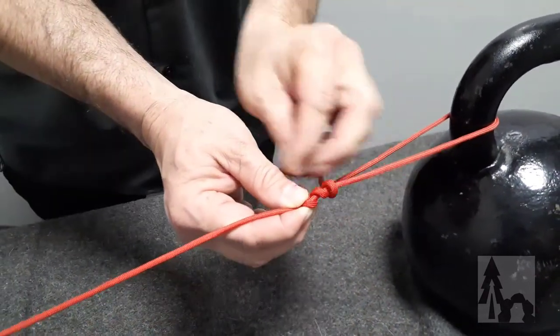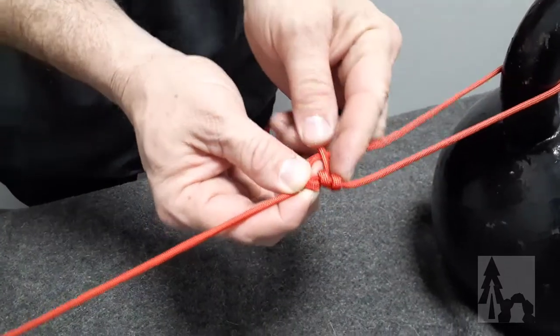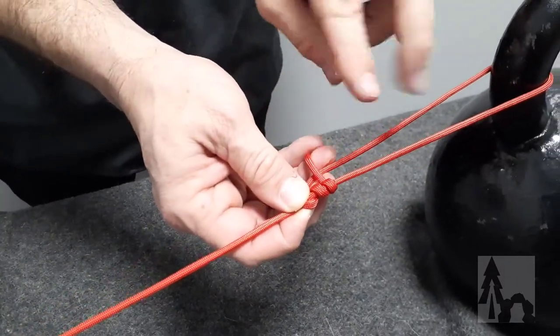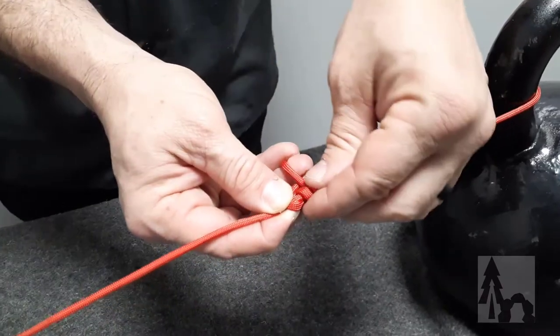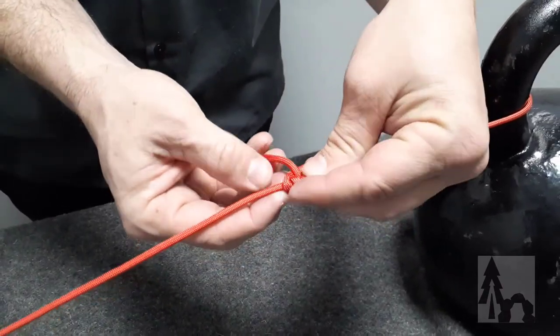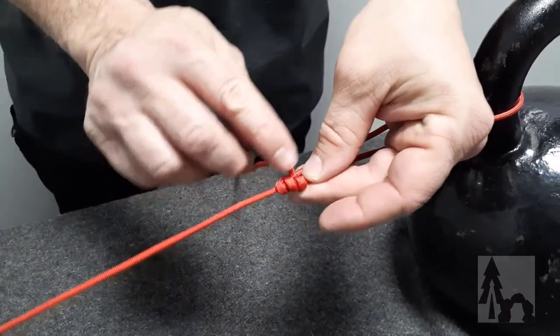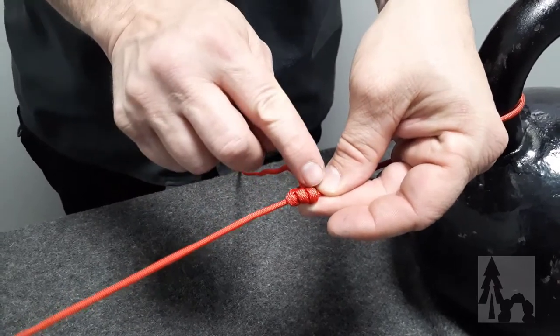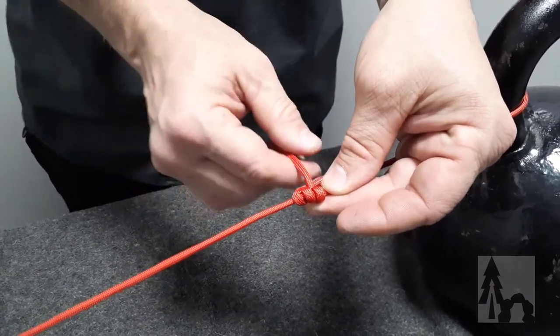Then I'll pull through one more time. So now I've made two full turns around the standing line inside that loop. Now I'm going to let loose of the crossing. So you've got the two full turns. It looks like three turns, but it's two full, and then that half where I first did the crossing.